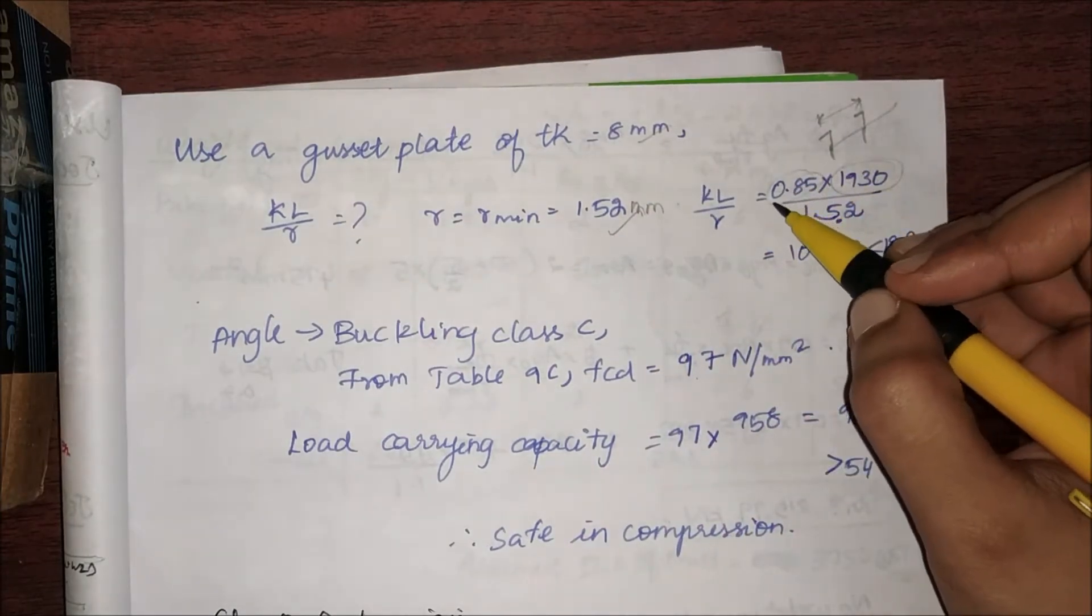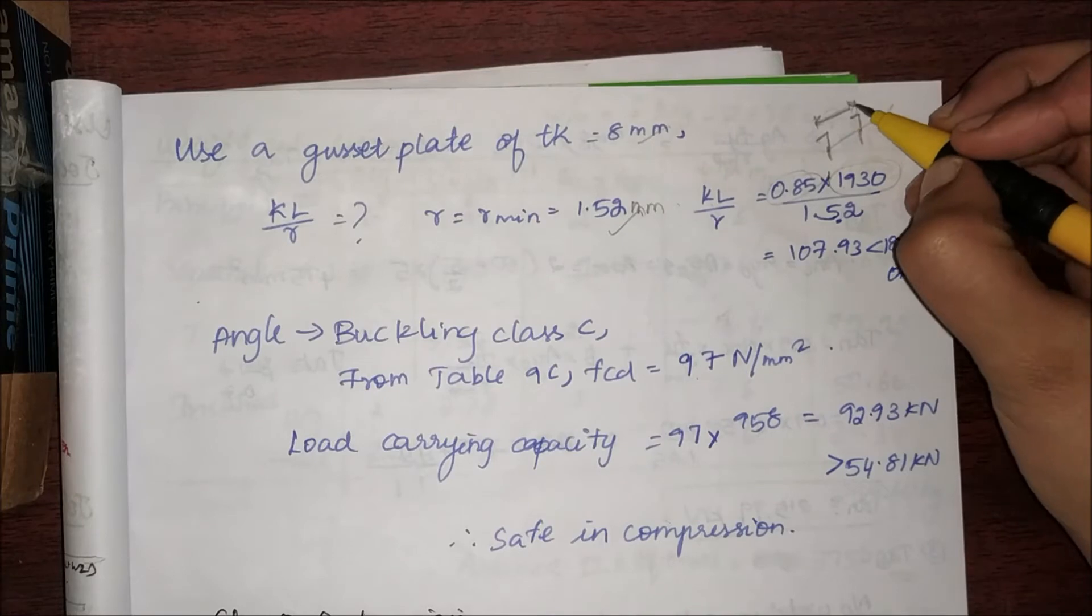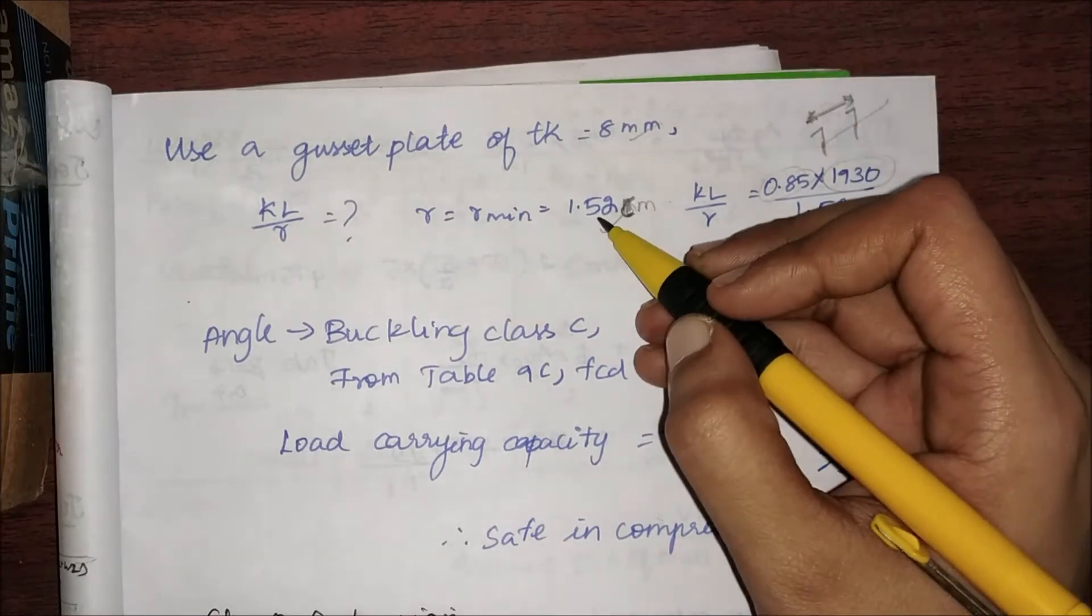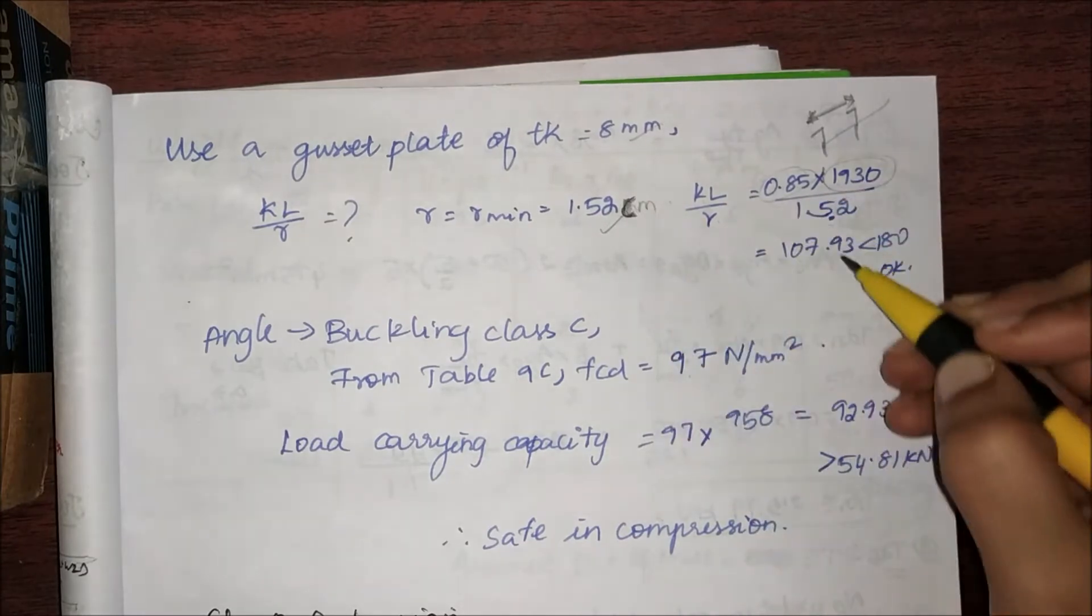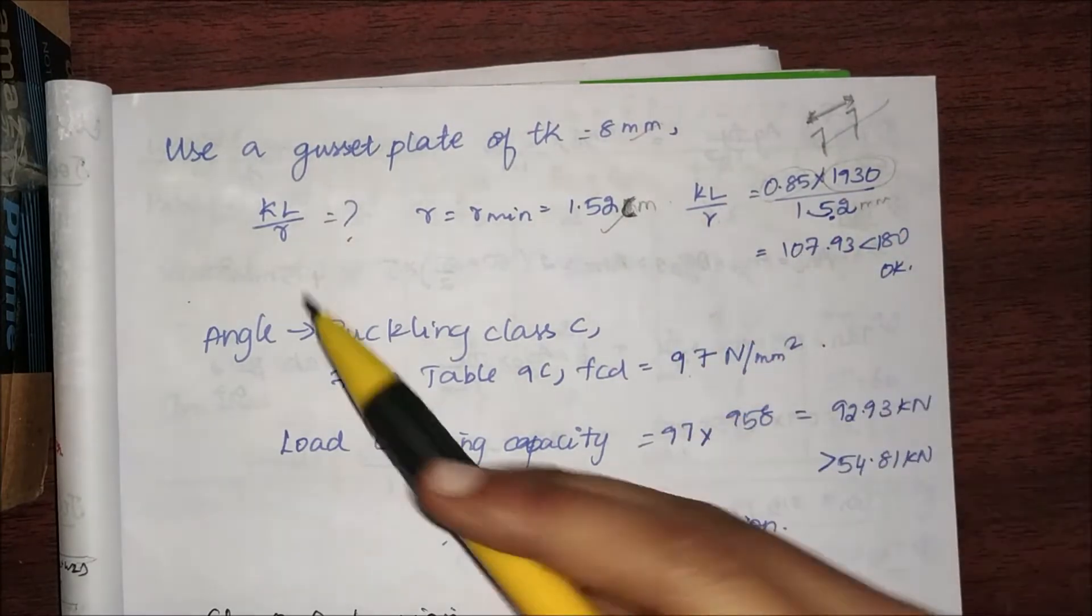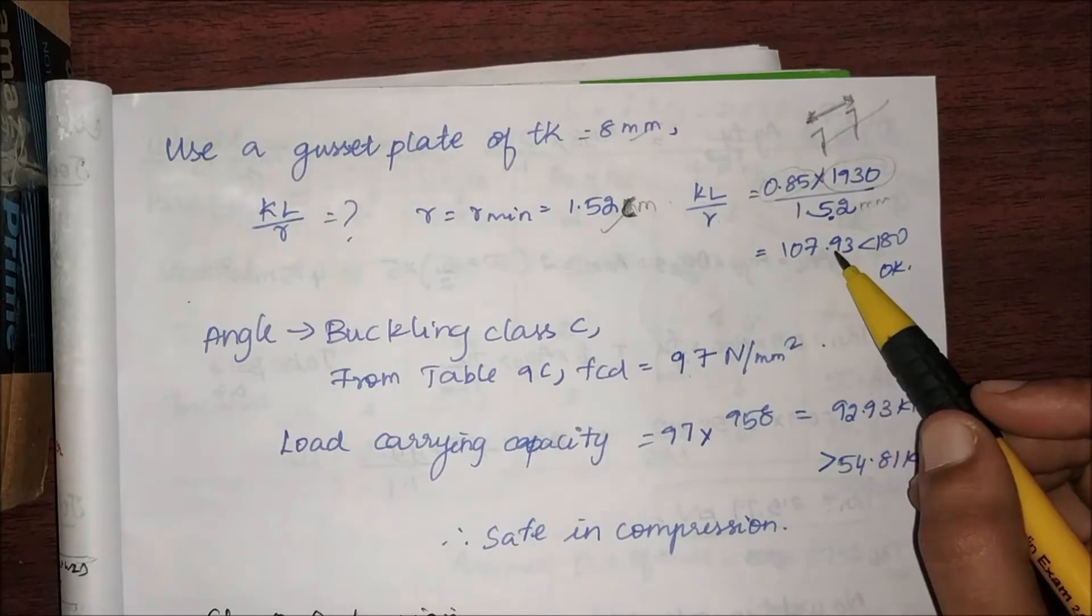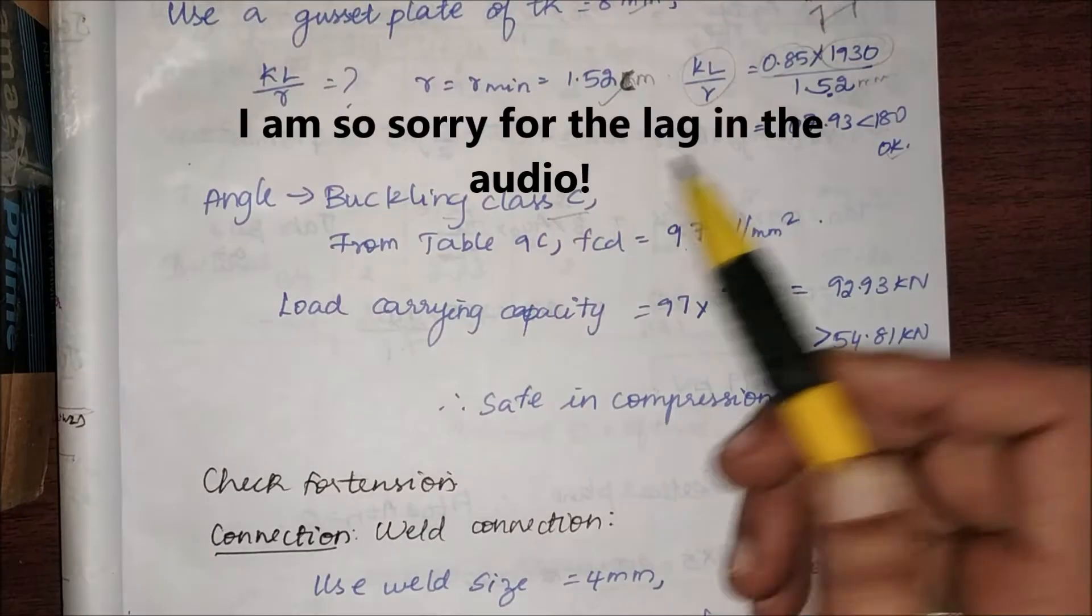kl/r: since it is simply supported, k is 0.85 times 1930 mm (the distance between our purlins) divided by r, which is 15.2 mm. I'll get my kl/r as 107.93, which is less than 180, therefore it is okay.